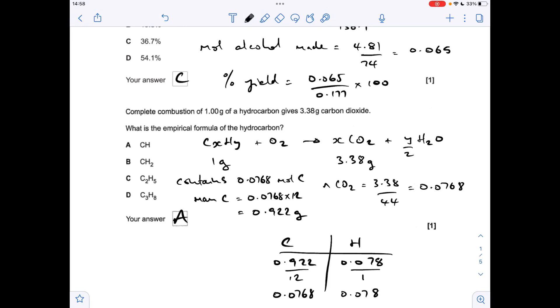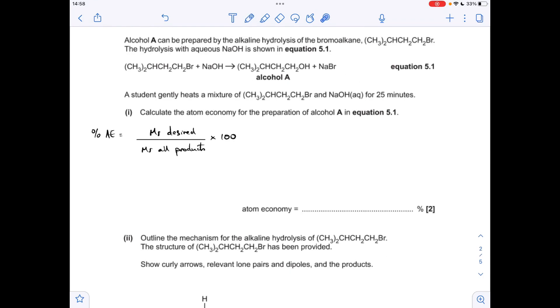Moving on to the main questions now, we've got to work out the atom economy for the preparation of alcohol A. There's just a reminder of the formula we use: percentage atom economy is the MR of the desired product divided by the MR of all the products, or you could divide by the MR of all the reactants if you prefer because it's the same, and multiply that by 100.